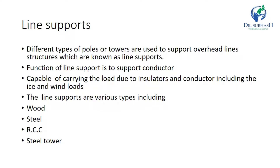Here is the line support. Different types of poles or towers are used to support the overhead line structure, which is known as a line support, also called a pole. The function of a line support is to support the conductor. It is capable of carrying the load due to the insulator and conductor, including ice and wind load. Line supports are of various types including wood, steel, RCC, and steel tower.